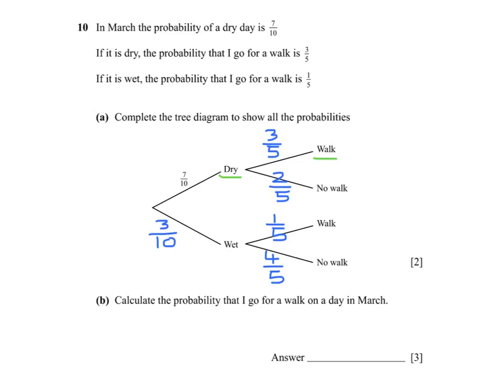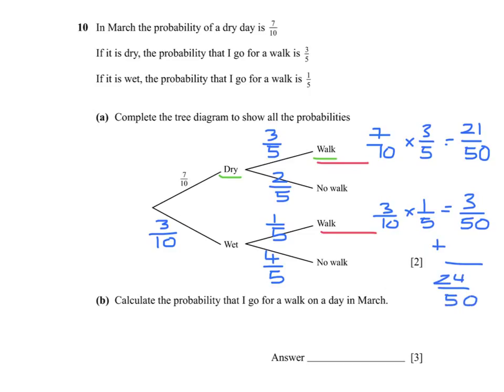We want to work out the probability that on a day in March we go for a walk. So we are interested in these outcomes. When we are working along the branches of a tree diagram, we multiply. So the first one will be 7 tenths times 3 fifths, which gives us 21 fiftieths. And the second one will be 3 tenths times 1 fifth, which gives us 3 fiftieths. Adding those together we have 24 fiftieths, and simplifying our answer we get 12 twenty fifths.